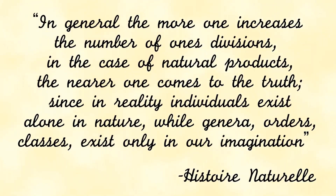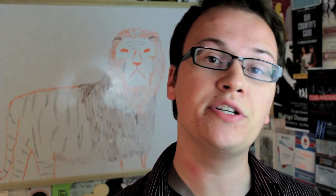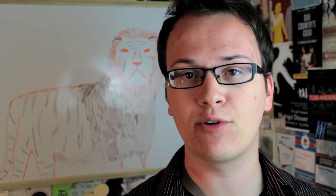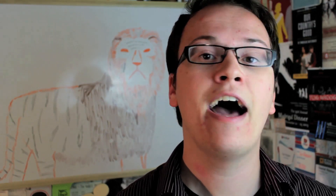In his own words, Buffon says: "In general, the more one increases one's divisions in the case of natural products, the nearer one comes to the truth. Since in reality, individuals exist alone in nature, while genera, orders, and classes exist only in our imagination." Buffon was doing his work well before Darwin came along, but his conclusion does fit well within the modern Darwinian understanding — in that we can't think of life as these neat categories that never overlap, because life is instead an evolutionary continuum of ancestry and descent.